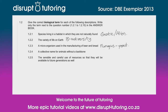1.2.4 — a collective name for animals without a backbone. A good example is insects, and those are known as invertebrates. If an organism has a backbone, it is a vertebrate.